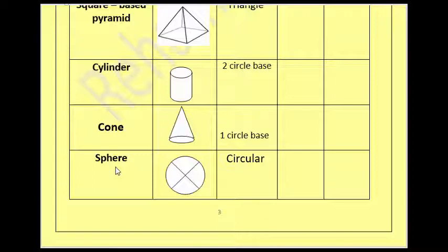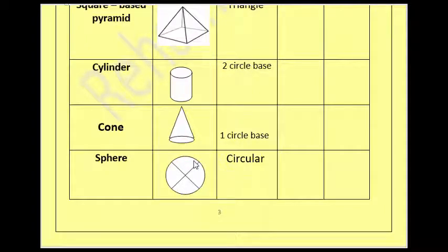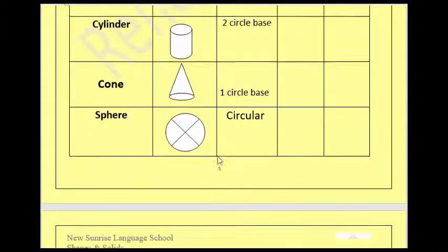And sphere — the last solid we have. Repeat after me: sphere. This is like a ball. It is circular. Sphere is circular.